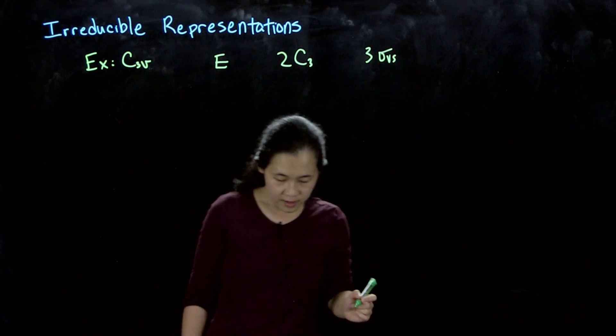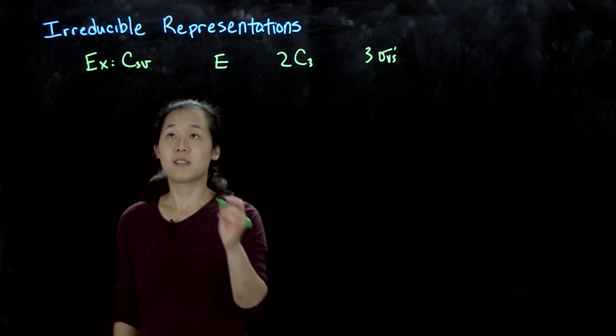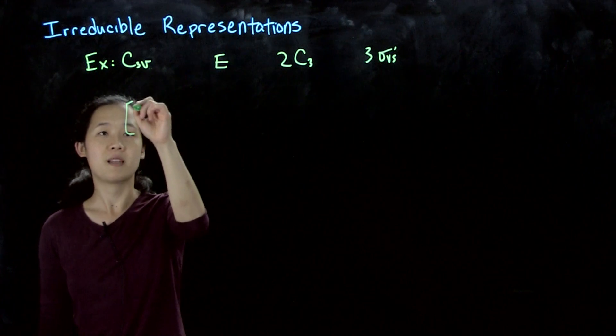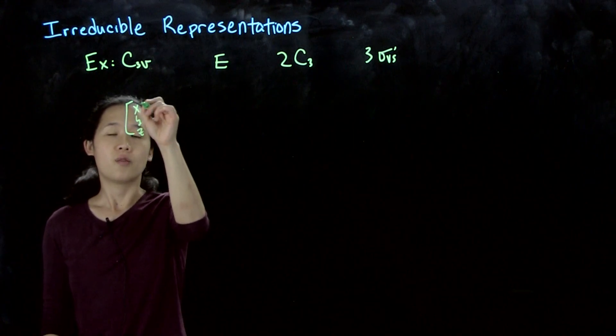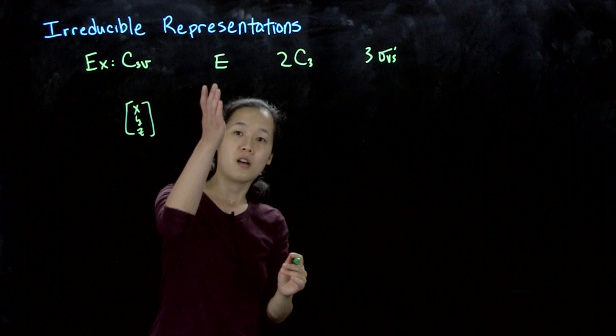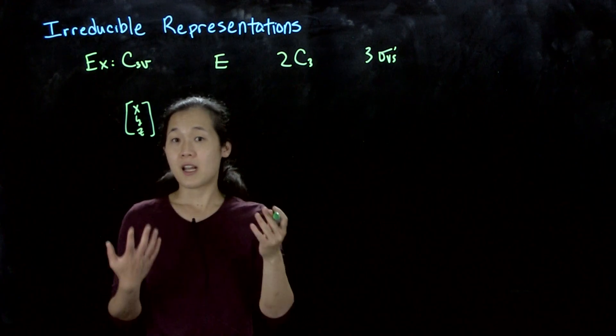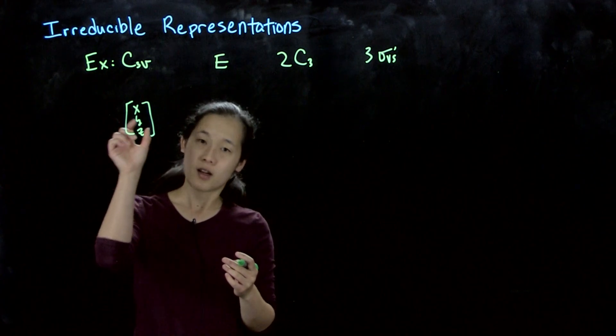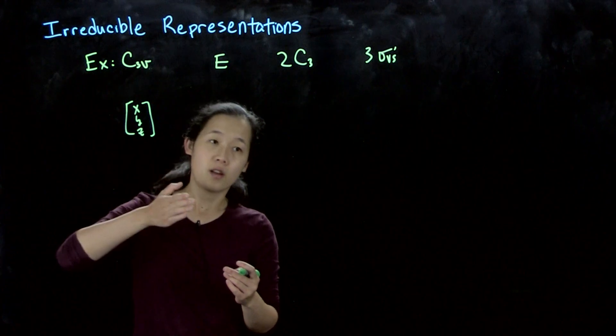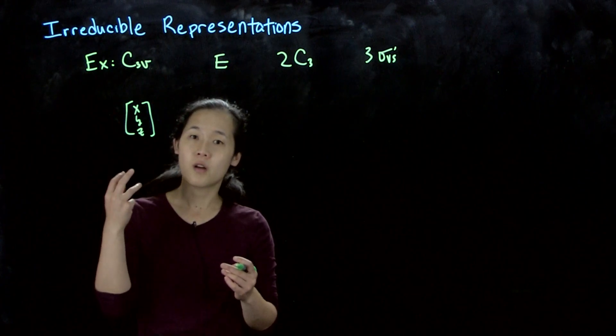We used the X, Y, Z basis, and we studied how the different symmetry operations could be represented as matrices that could then transform X, Y, Z into the symmetry equivalent new X, Y, Z coordinates.